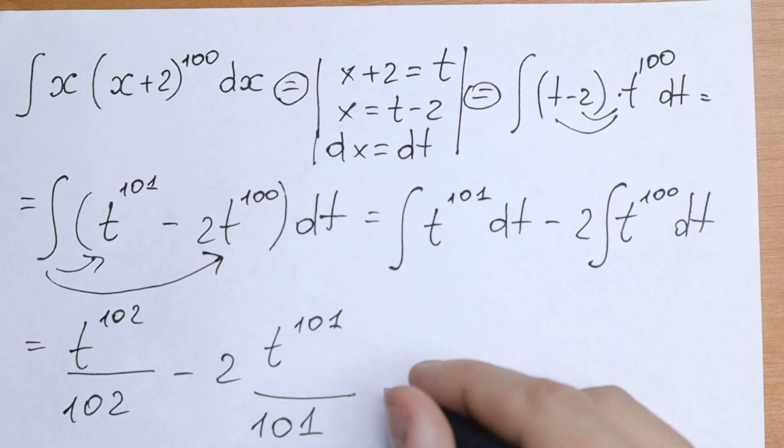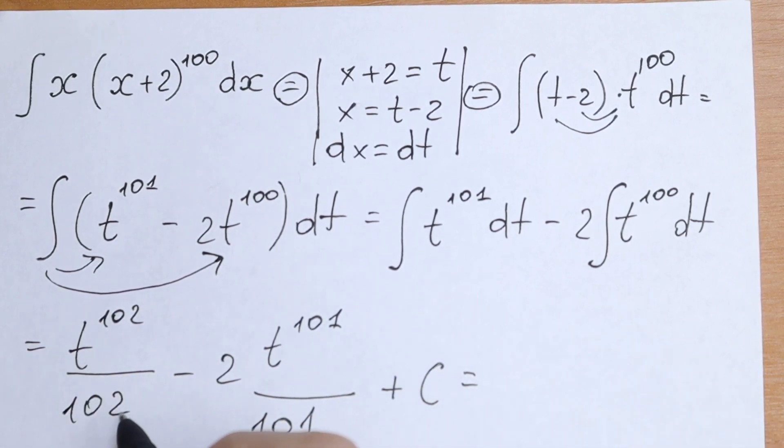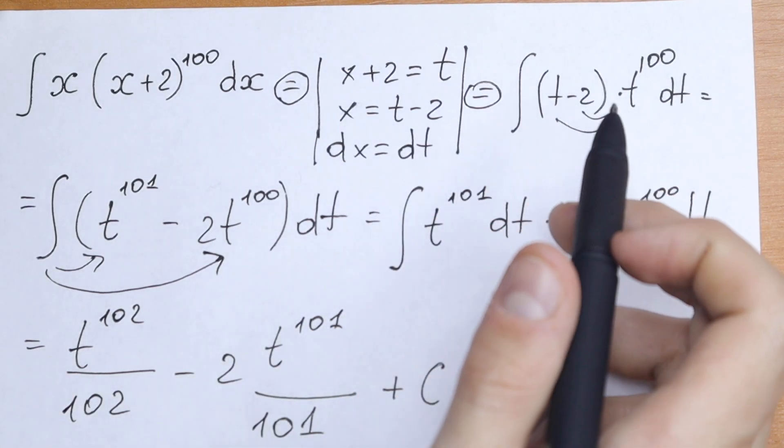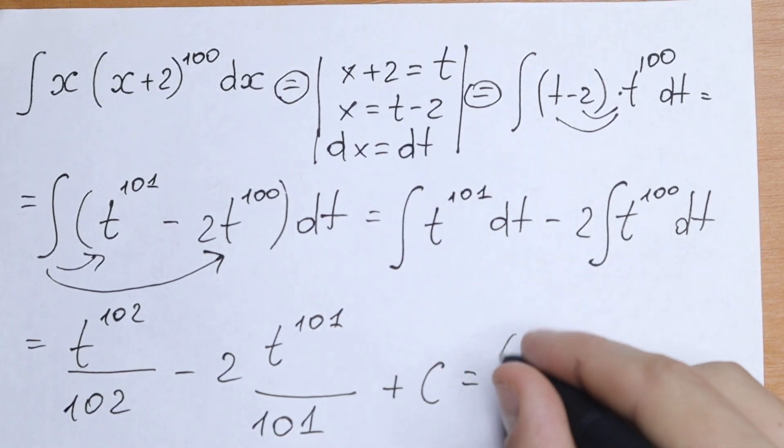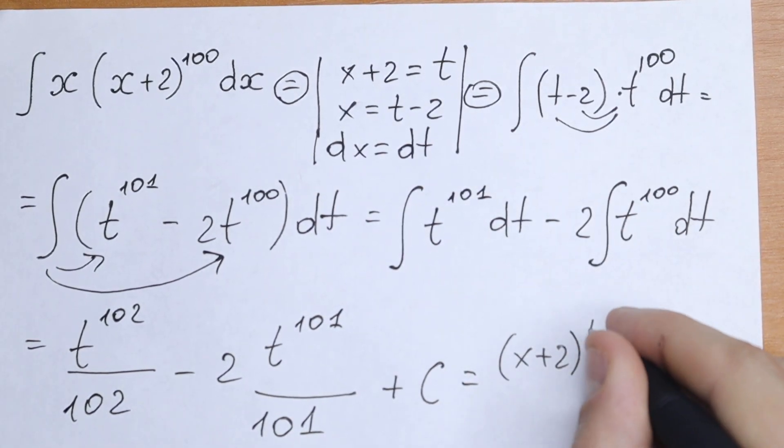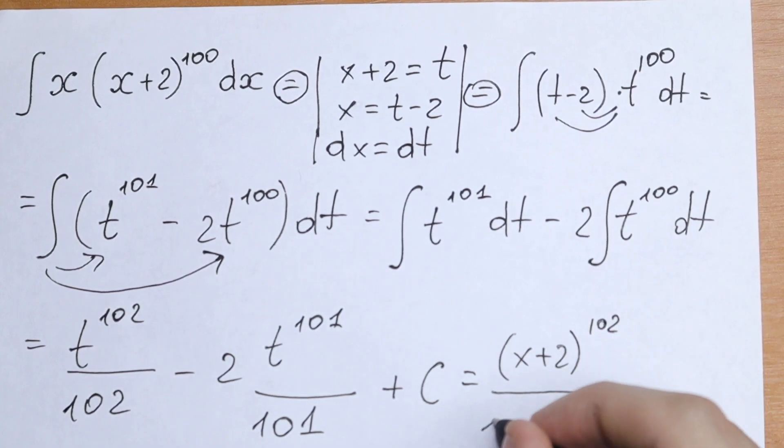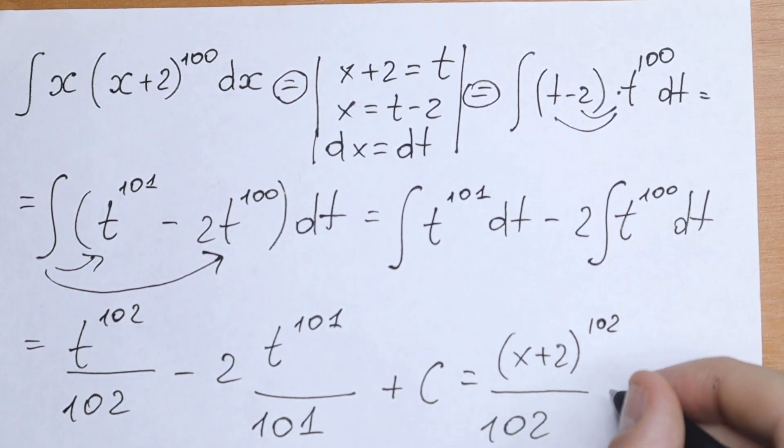And if we simplify this, we will have plus c in the end and let's put... Instead of this t, let's put our x. So t equal to x plus 2.